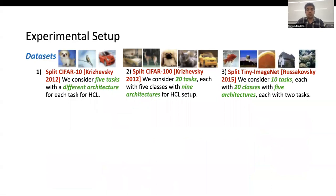Let's look at the experimental results now. We evaluate on three popular datasets: CIFAR-10, CIFAR-100, and Tiny ImageNet. For our HCL setup on CIFAR-10, we consider five tasks with a different architecture for each task. For CIFAR-100, we consider 20 tasks with five classes, using nine architectures. For Tiny ImageNet, we use 10 tasks with each task containing 20 classes, and we use five architectures where a single architecture is used for two tasks. Please refer to the paper for more details about the architectures and how they are split for different datasets.